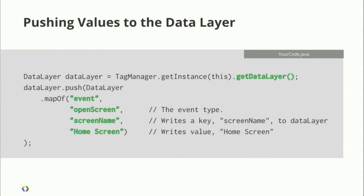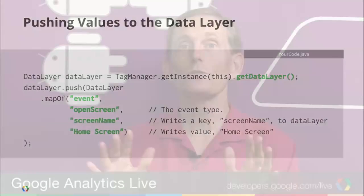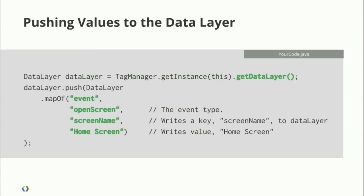The second thing you use the data layer for is pushing events. An event is a map of values, one of which has the name 'event' — that's really what makes it different from any other data layer push. Once an event is pushed, any associated tags that have been registered for that event will get executed. As an example, you might push an event when you open a screen — every time you go to a new screen or new activity. You can add additional data like which screen name it is, and that'll be useful when you get to the actual tag. Pushing to the data layer is quite inexpensive — if there are no tags with rules associated with that event, it's a very simple call. So you can afford to push data layer events any time something interesting is happening in your application.